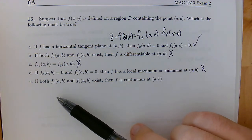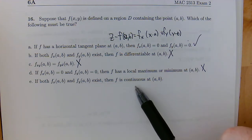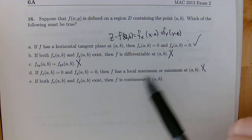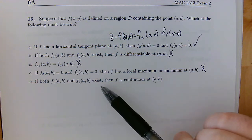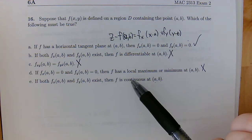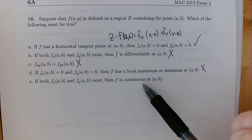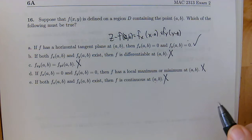All right, and then the last statement here, if both f_x and f_y exist, then f is continuous at (a,b). And in the same counterexample we had up here, we saw that we had partial derivatives, and they both existed, but we didn't even have a continuous function, because we took the limit in two different ways for that, and we ended up not getting the same value. So that's going to be false as well.